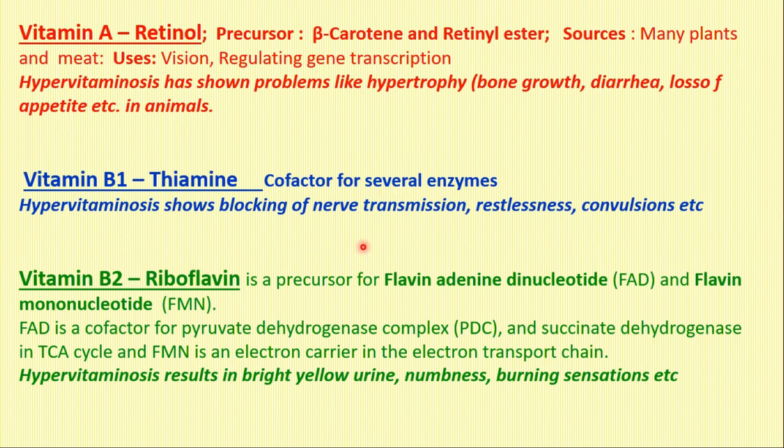Vitamin B2, which is riboflavin, is a precursor for FAD (flavin adenine dinucleotide) and FMN (flavin mononucleotide). FAD is a co-factor for pyruvate dehydrogenase complex and succinate dehydrogenase in the citric acid cycle. FMN is an electron carrier in the electron transport chain. Hypervitaminosis of B2 results in bright yellow urine, numbness, burning sensation, etc.